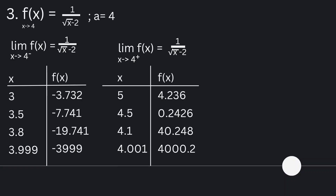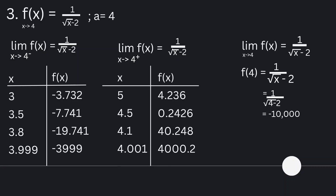And from the right, it is equal to positive 4,025. So they are not equal. After estimating the limit of the function from left and right, we are now going to determine f of c. f of 4 is equal to 1 over the square root of x minus 2. Substituting 4 for x, 1 over the square root of 4 minus 2 is equal to negative infinity. Therefore, the limit of f of x as x approaches 4 is not equal to f of 4.